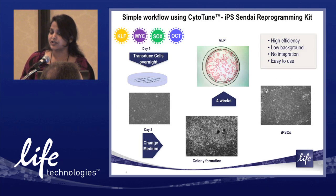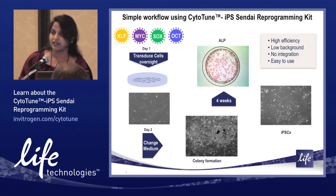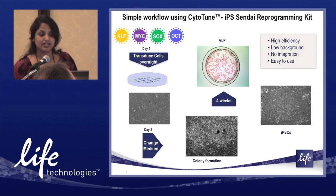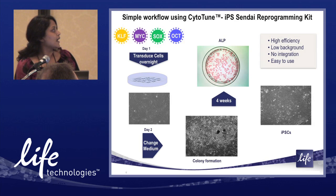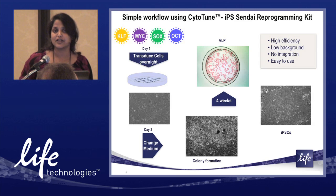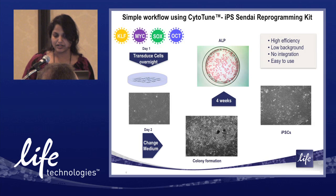The four factors come in four tubes, which can be transduced overnight onto MEFs. Most of our protocols are currently for fibroblasts, but we are developing methods for other cell types, mainly blood lineages. After a one-time contact — no repeated transductions needed — you give it around three to four weeks. Colony formation starts at week three, and by week four you have more colonies than you really need.